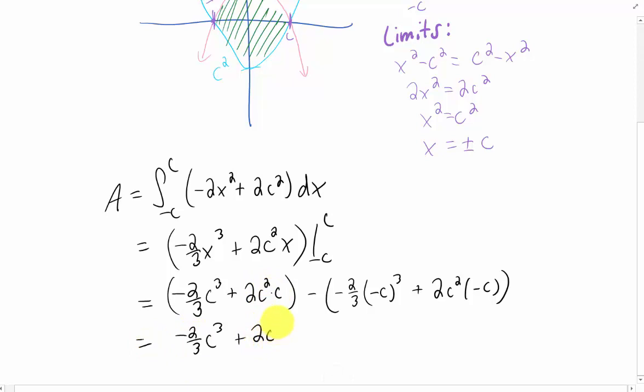C squared times C is just C cubed. Negative C, that quantity cubed, is going to give us an extra negative sign. That's going to cancel with this negative sign, but we're still having a third negative sign that's going to stick around. Over here, multiplying C squared by negative C is going to put a negative on this term, but that negative out in front is going to make this whole term positive.